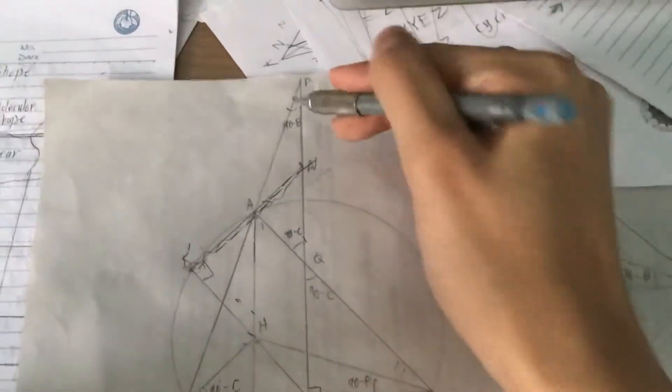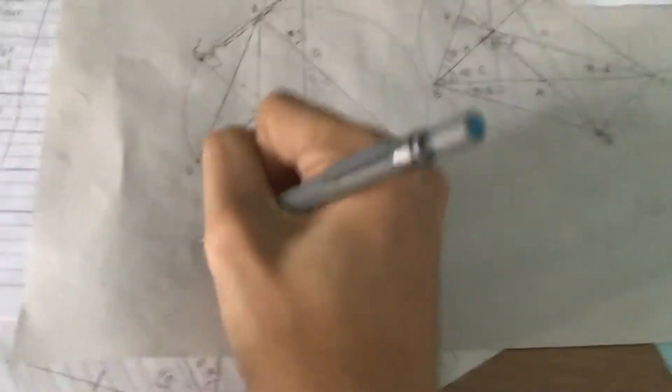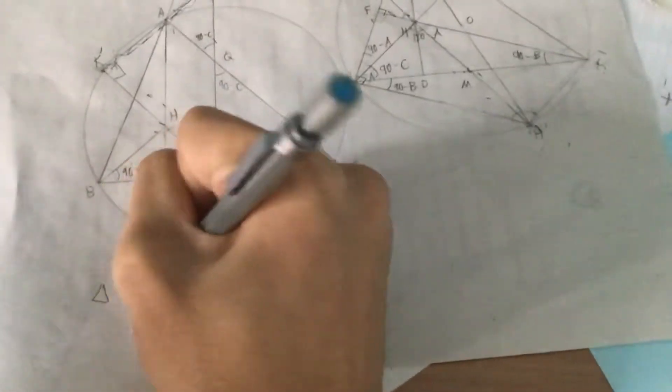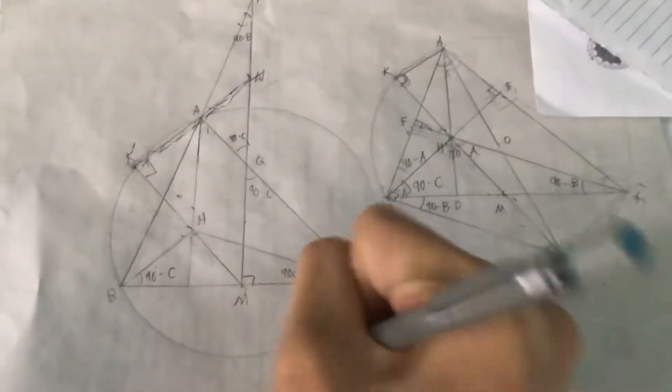90 minus C, 90 minus C, 90 minus B, 90 minus B. We get, my hand hurts. My iPad's heavy. Triangle PHC similar to triangle QAP. Boom.